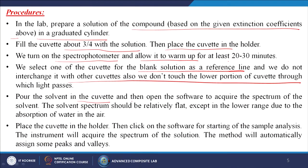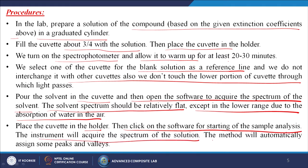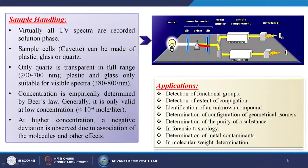Do not touch the lower portion of cuvettes through which the light passes, otherwise fingerprints or contamination may occur. Pour the solvent in the cuvette and then open the software to acquire the spectrum on the solvent. The solvent spectrum should be relatively flat except in the lower range due to the absorption of water in the air. Place the cuvette in the holder then click on the software for starting the sample analysis. The instrument will acquire the spectrum of the solution; the method will automatically assign some peaks and valleys. This is the whole procedure for how we perform UVVis analysis for our sample.